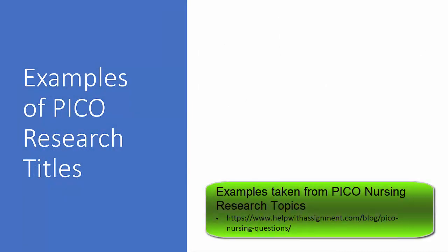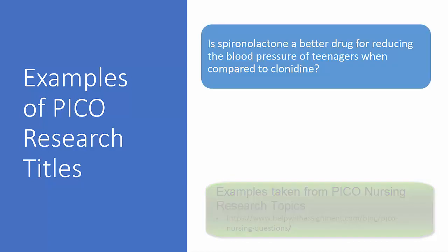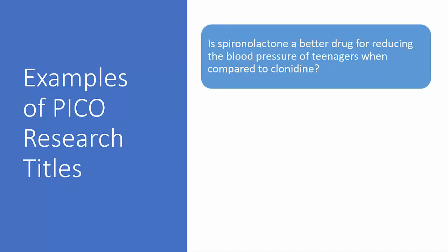Let me share some examples of PICO research questions. Number one: is spironolactone a better drug for reducing the blood pressure of teenagers when compared to clonidine? The population are the teenagers, the intervention is use of spironolactone, the control is the use of clonidine, and the outcome is a blood pressure reduction.